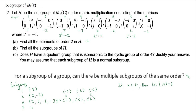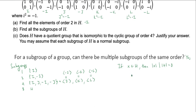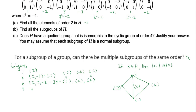Now let's draw a picture of the subgroup lattice of H. At the top I have H. Below that I have three order-4 subgroups: the subgroup generated by J, the subgroup generated by K, and the subgroup generated by L. Each one of these contains the unique subgroup of order 2, which is the subgroup generated by negative I, sitting in the middle. And inside that is the identity subgroup at the bottom. That's all of the subgroups.